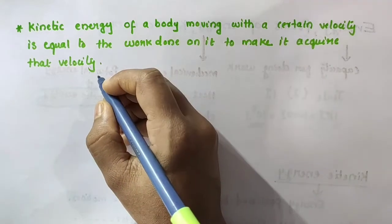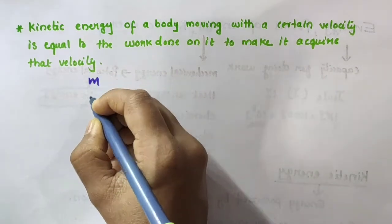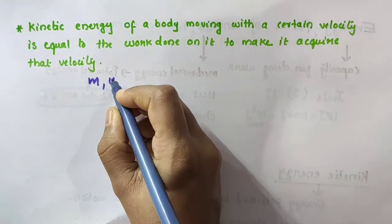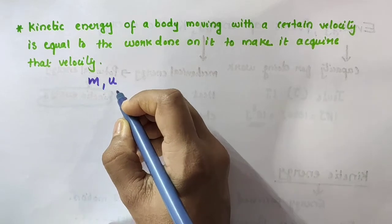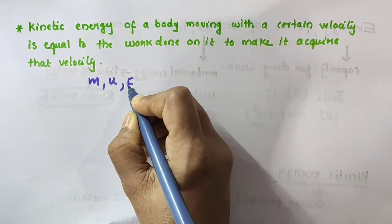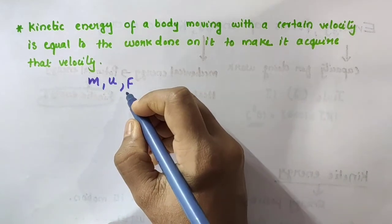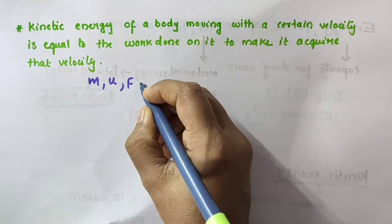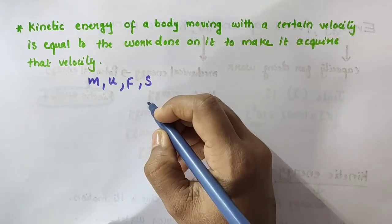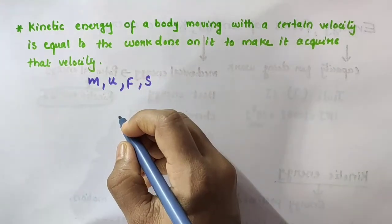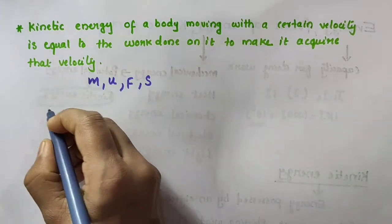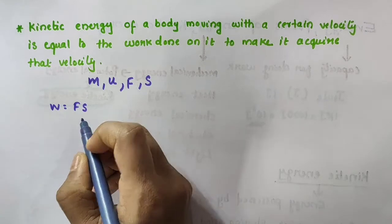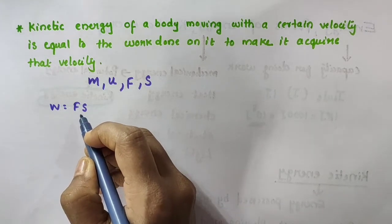make it acquire that particular velocity. Consider an object of mass M moving with a uniform velocity U — U is the initial velocity. When a constant force F acts on the object, the object will get displaced. Let it be displaced through a distance S. Assume that the force and the displacement are along the same direction.